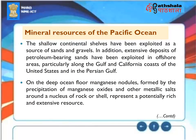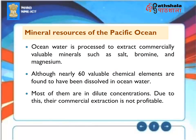Mineral Resources: The shallow continental shelves have been exploited as a source of sands and gravels, and extensive deposits of petroleum-bearing sands have been exploited in offshore areas, particularly along the Gulf and California coasts of the United States and in the Persian Gulf. On the deep ocean floor, manganese nodules — formed by precipitation of manganese oxides and other metallic salts around a nucleus of rock or shell — represent a potentially rich resource. Ocean water is processed to extract commercially valuable minerals such as salt, bromine, and magnesium, although nearly 60 chemical elements dissolved in ocean water are in concentrations too dilute for profitable commercial extraction.